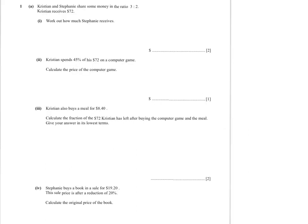Question one — it's not a surprise, it's a question about ratio and percentages. Most of the times, that is what question one will be about. Christian and Stephanie share the money in the ratio of three to two, so Christian will receive more than Stephanie. He receives $72. Work out how much Stephanie receives. Christian gets three units. I divide 72 by three, which gives 24, and then 24 times two gives 48. So she's going to get $48.